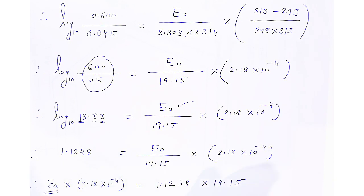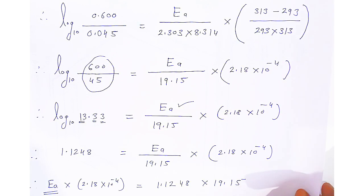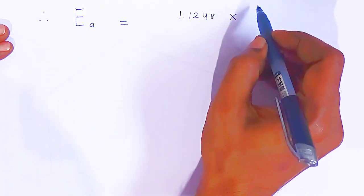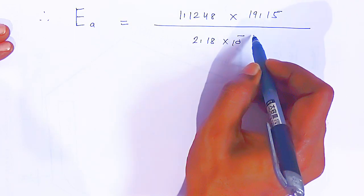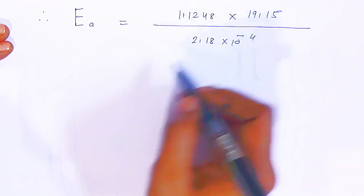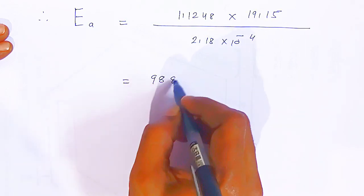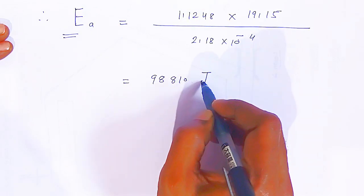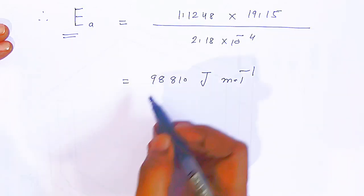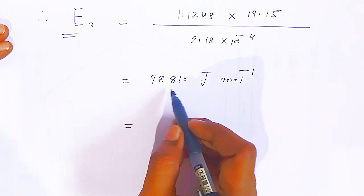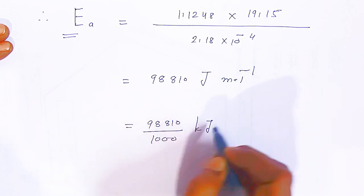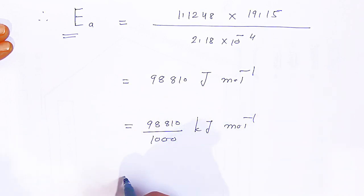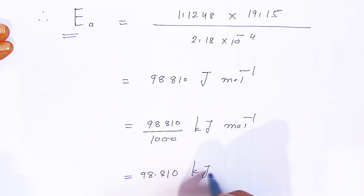When you perform this multiplication using the log table, the value comes out to 98,810 joule per mole. Since it is energy, we represent it in joule per mole. If you want to convert it to kilojoule per mole, divide by 1000, giving 98.81 kilojoule per mole.